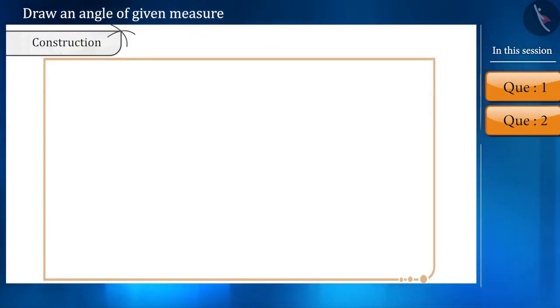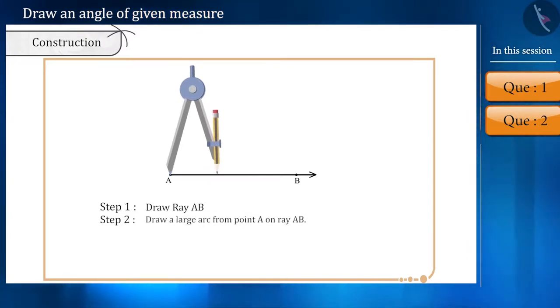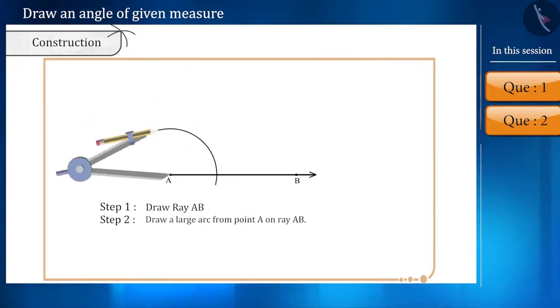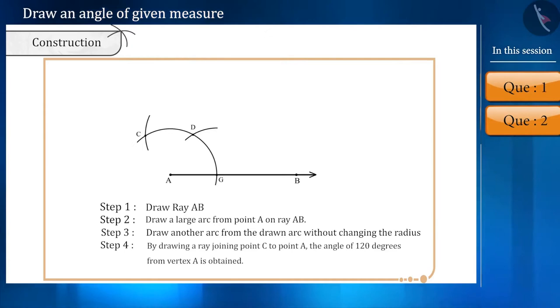Now, we will see these steps in brief. Draw ray AB. With the help of a compass taking a radius, draw a large arc from the vertex A in such a way that it intersects the ray AB. Without changing the radius, from this point of intersection, draw an arc in such a way that it intersects the arc drawn from point A at D. Once again, with the same radius, and intersecting the larger arc from point D at point C, another arc will be drawn. Finally, drawing a ray joining vertex A to point C, an angle of 120 degrees can be obtained.